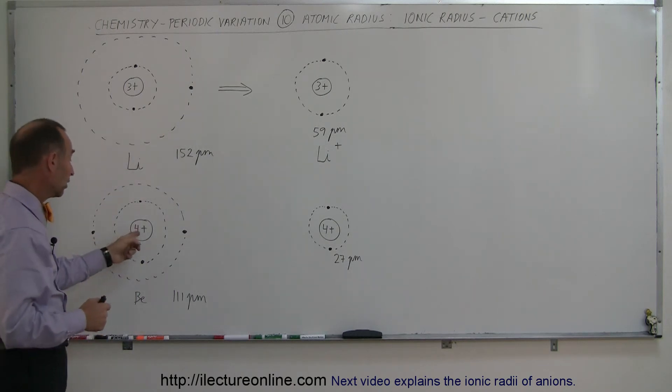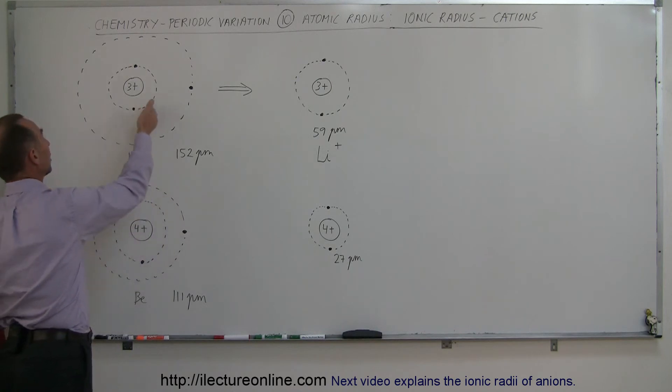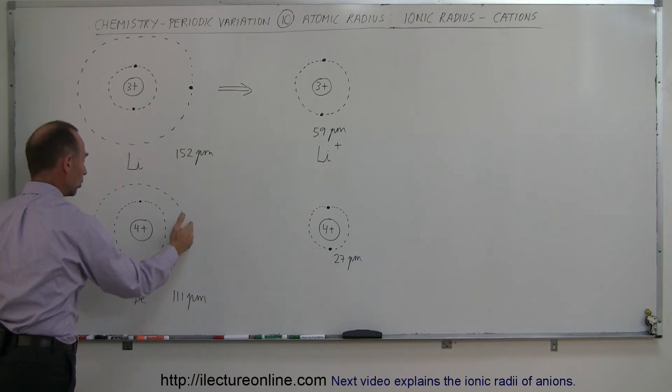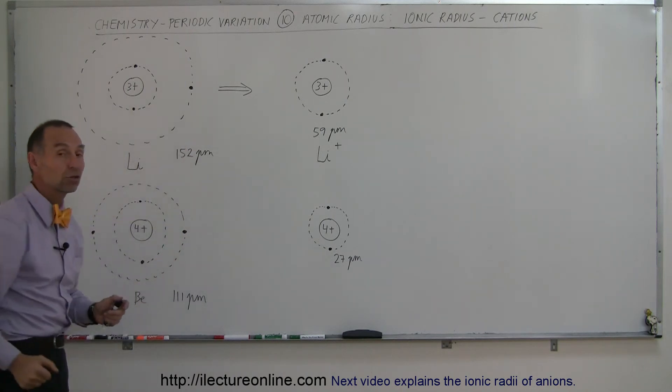It has one additional charge in the nucleus, same screening effect with two electrons at innermost energy level, so therefore the additional positive charge pulls harder on the two electrons on the outside, pulling them in closer, making for a smaller atom.